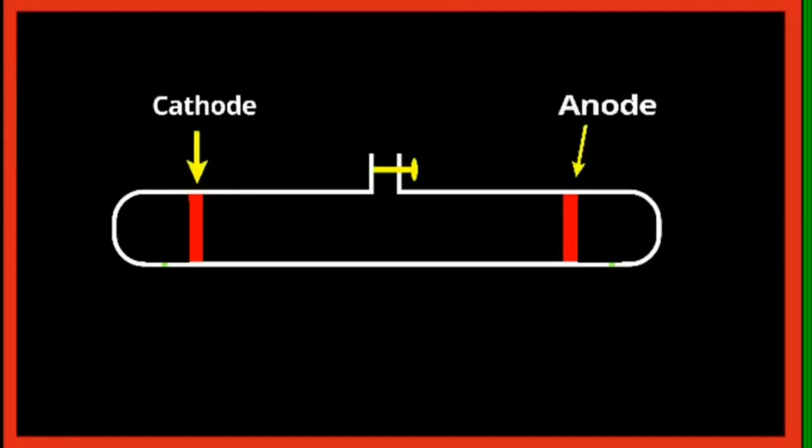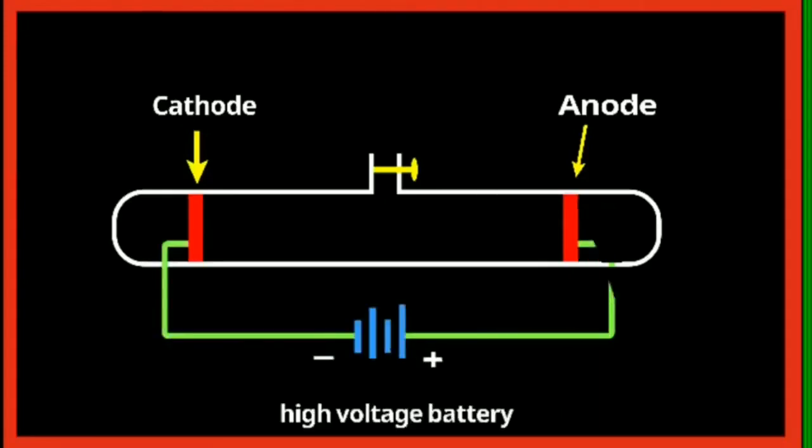Then a low pressure is maintained by using the vacuum pump and high voltage is applied. But there is one modification which is made: the cathode used is perforated, that is having small holes inside it.